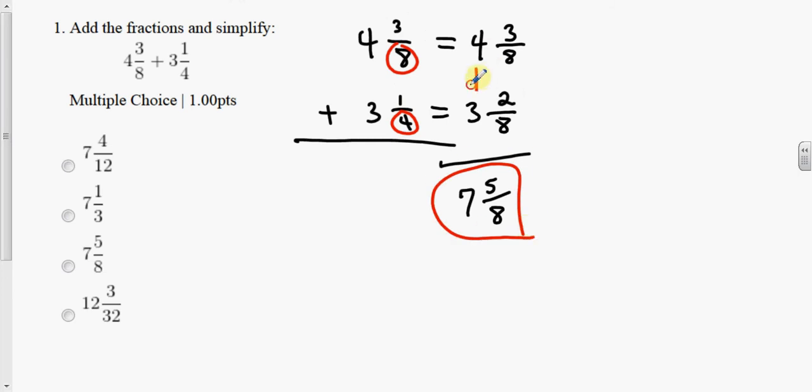So again we add these two numbers, this number here, that number, they're added. Why do we add? Because it says to add. If it was subtract we'd be subtracting those two numbers, 3 minus 2, and then all over the common denominator.